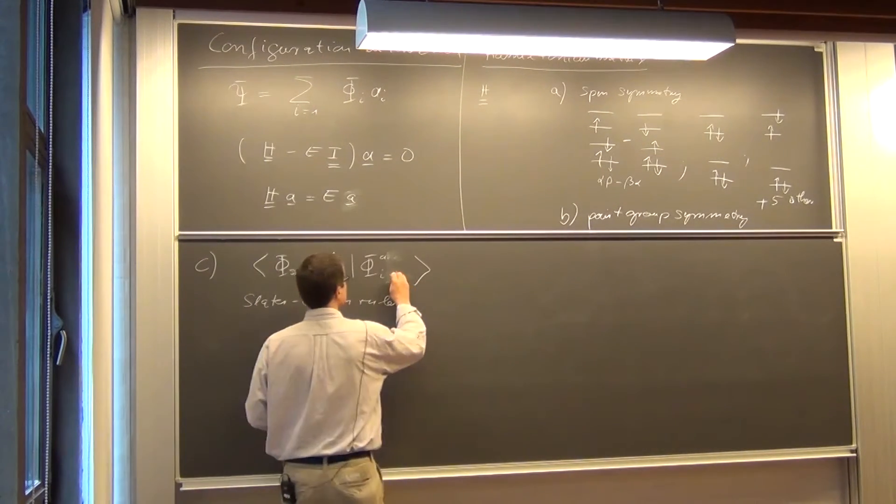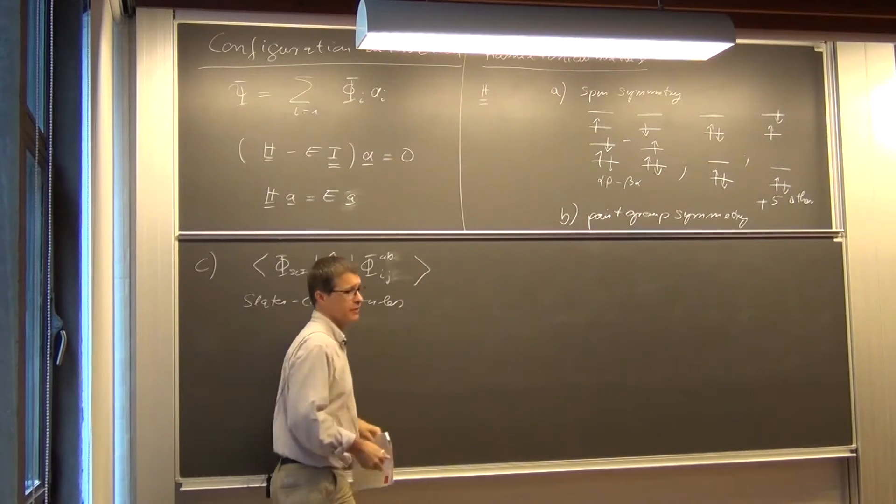meaning there is a difference in one orbital between those two determinants. And if I have i, j, a, b, then there is a difference in two orbitals.